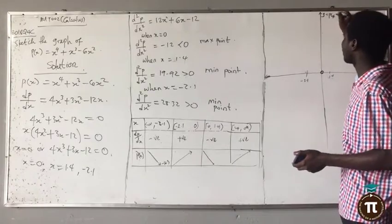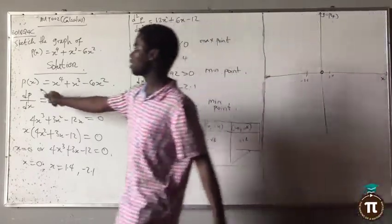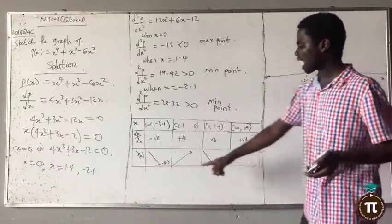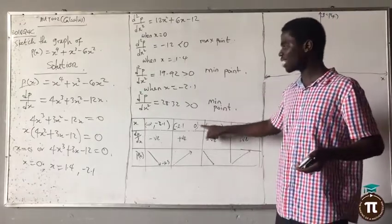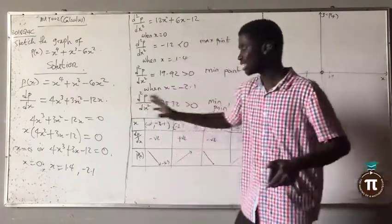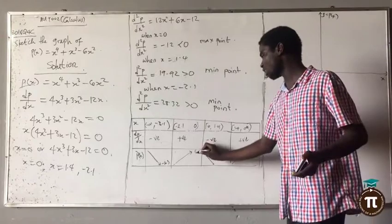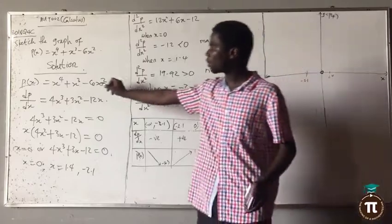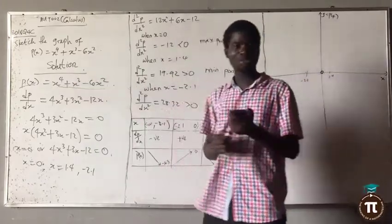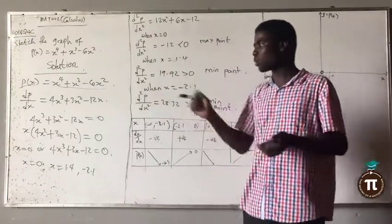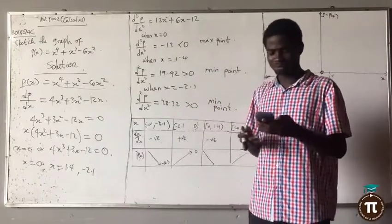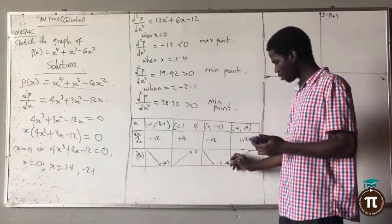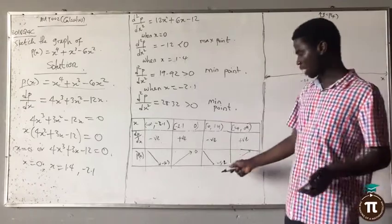The y-axis here is the same as p(x) and the x-axis is s, so at that point it will now come up. When x = 0: p(0) = 0 + 0 − 0 = 0, so the function comes back up to zero. When it gets to zero it will come down again. At x = 1.4: p(1.4) = 1.4⁴ + 1.4³ − 6 × 1.4² ≈ −5.2.